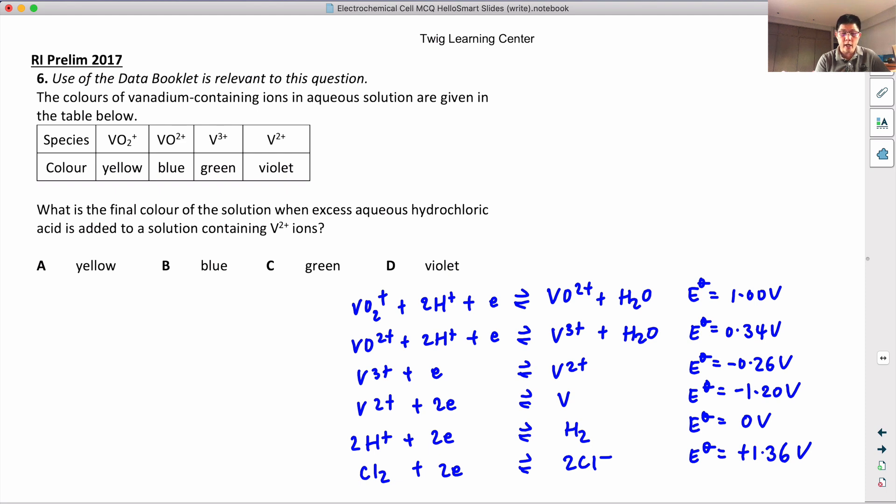So the colors of vanadium-containing ions are given. What is the final color of the solution when excess aqueous hydrochloric acid is added?